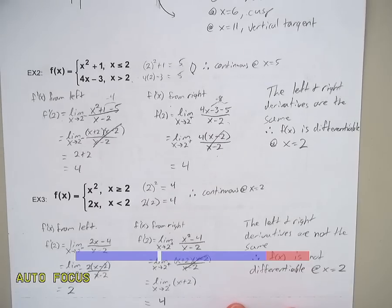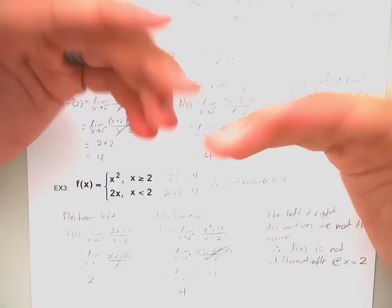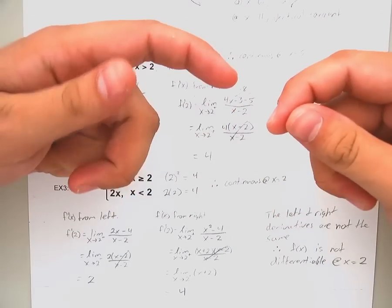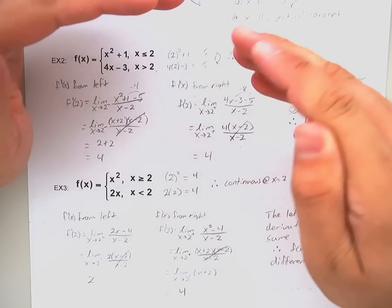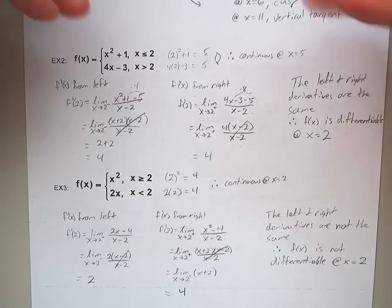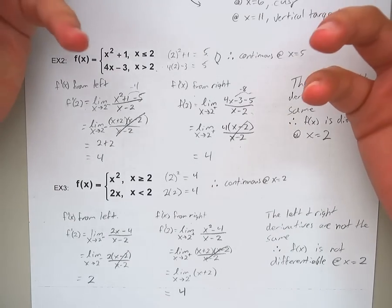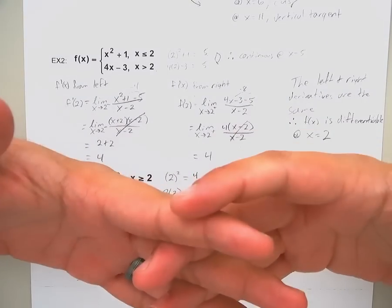So just kind of a general overview here. Remember that to be differentiable, to be able to take a derivative of something, your chart or your graph has to be smooth and continuous. No sharp turns where your slopes are going to be different on either side. Also it has to be continuous, no holes, no gaps, no breaks.